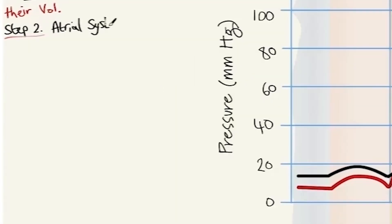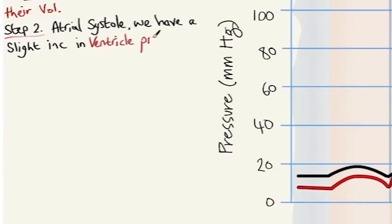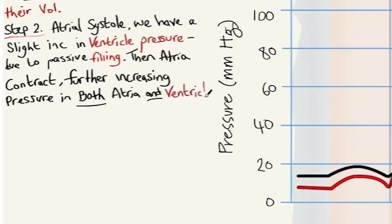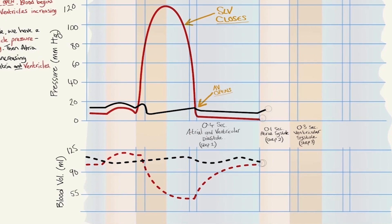In step two, atrial systole, there is a slight increase in ventricular pressure due to passive filling. The atria then contract, further increasing pressure in both atria and ventricles, which is visible on the graph where both atrial and ventricular pressure slightly increase. The blood volume graph shows both atrial and ventricular volumes increasing. In particular, ventricular volume increases due to atrial contraction ejecting blood into the ventricles, whilst blood continues to fill the atria from the pulmonary veins and vena cava.